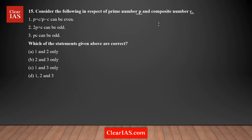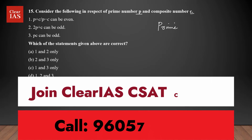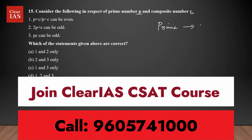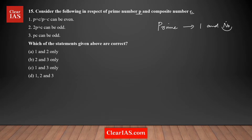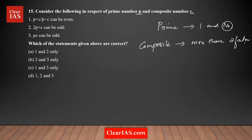What do you mean by prime number? Any prime number will have only two factors: one and that number itself. Composite numbers are numbers which have more than two factors — any number that has more than two factors is called a composite number.